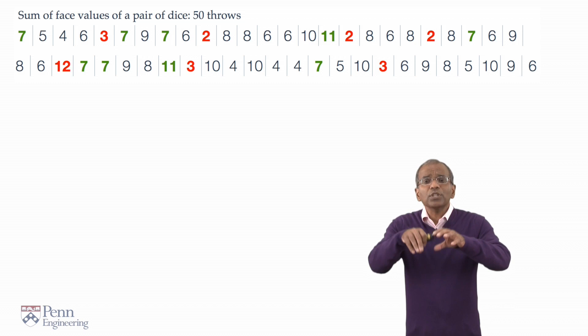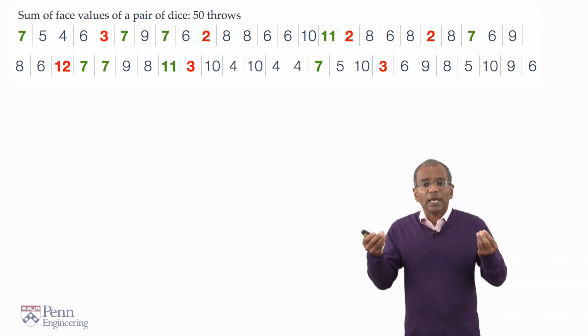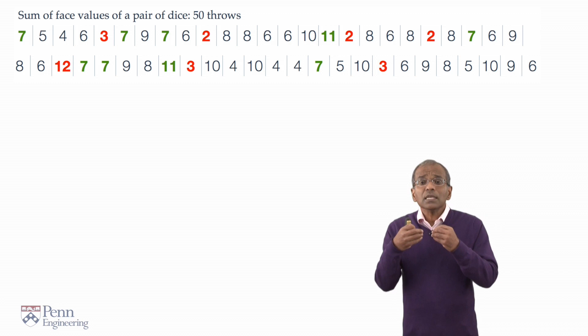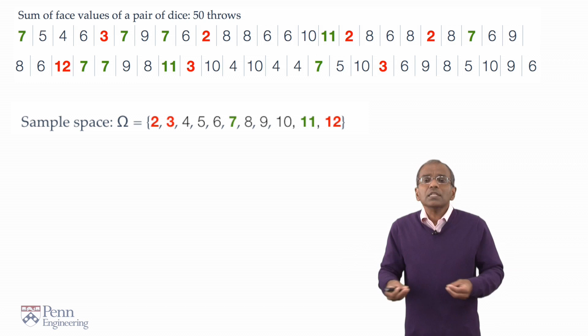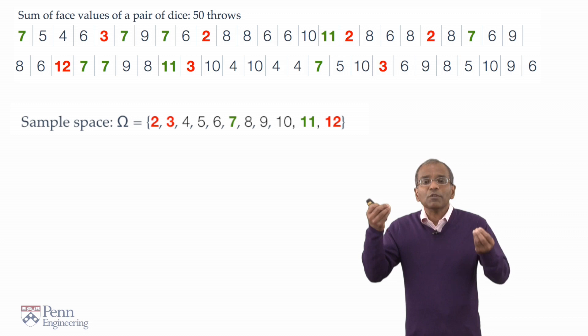The underlying chance experiment here involves reaching and throwing a pair of dice and summing the face values. This means that the outcome of the experiment could be viewed as an integer between 2 and 12. The sample space, omega, is a collection of integers running from 2 all the way up till 12.